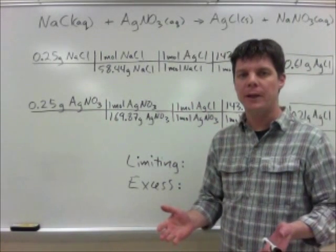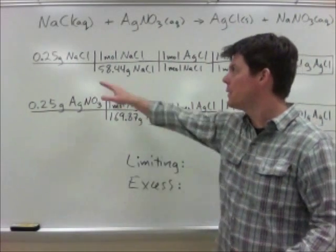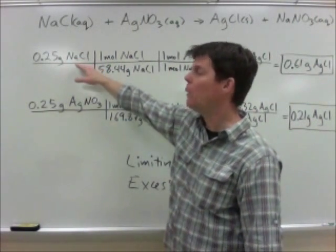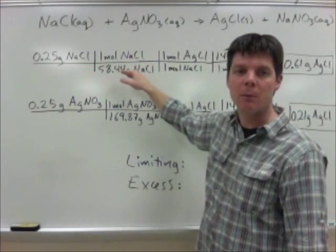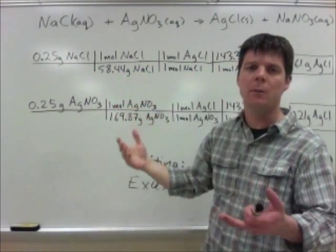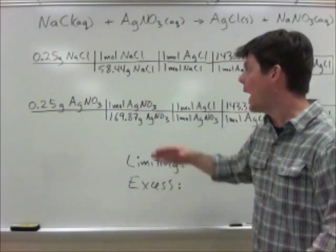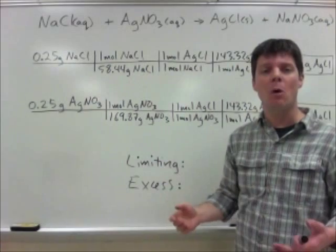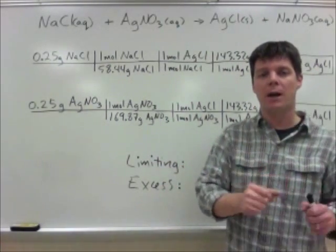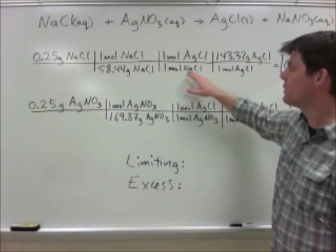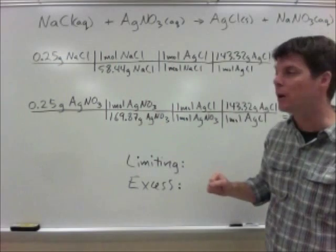We've set up the stoichiometry calculation using dimensional analysis. The top row here shows that we're starting out with 0.25 grams of sodium chloride. In this step, I'm using the molar mass of sodium chloride to determine how many moles of sodium chloride are available for this reaction. After doing this step, I'm now in the mole bucket, where I can use the ratio of reactant to products — one mole of sodium chloride allows us to produce one mole of silver chloride.